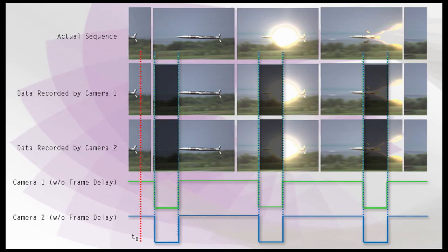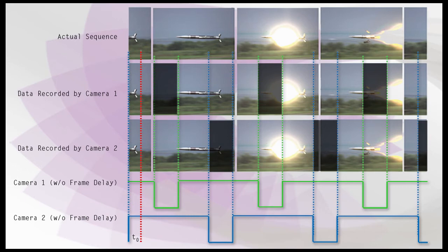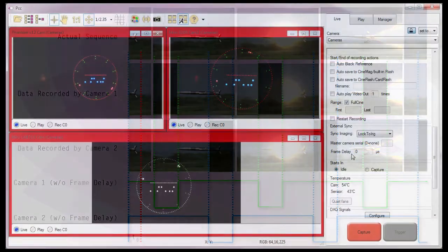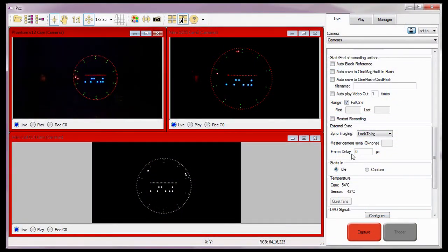Let's say the duration of the event I need to capture is only 3 microseconds. It's possible that without adding a frame delay to one of the cameras, the event could take place during the straddle time, thereby missing the event. However, if I add a frame delay to camera 2, it's capturing image data while camera 1 is experiencing its straddle time, thereby ensuring I capture the event with one of the cameras. Another use is to offset the propagational delay induced by the medium. For this tutorial, I'm going to leave the frame delay set to 0 microseconds for all cameras.